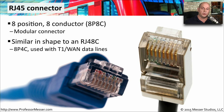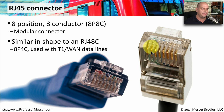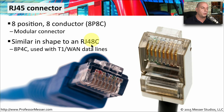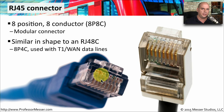For ethernet connections, we're using RJ45 connectors. This is an eight position, eight conductor cable, and you can see we're using all eight of those copper connections inside. If you're running a WAN connection — a T1 or some other type of WAN connectivity — it uses a similar connection, but it's really an RJ48C. It's an eight position four conductor cable, but they look very similar to each other.